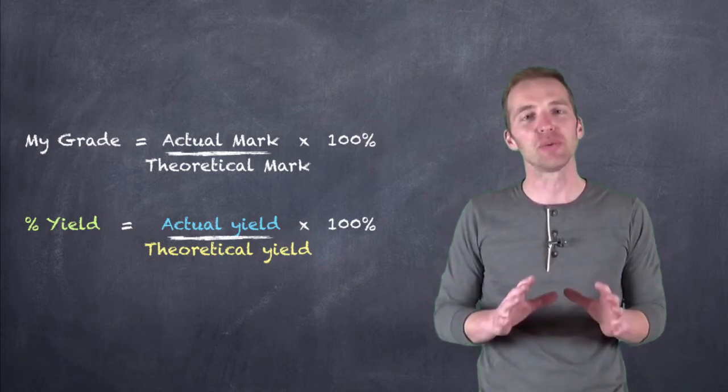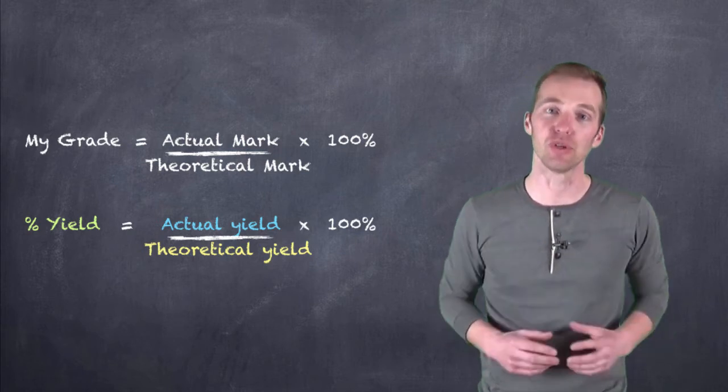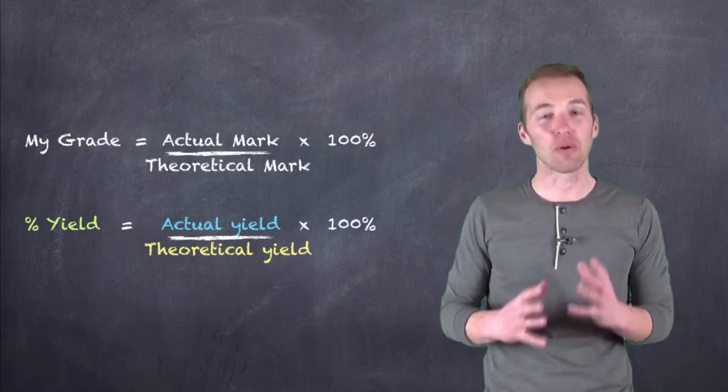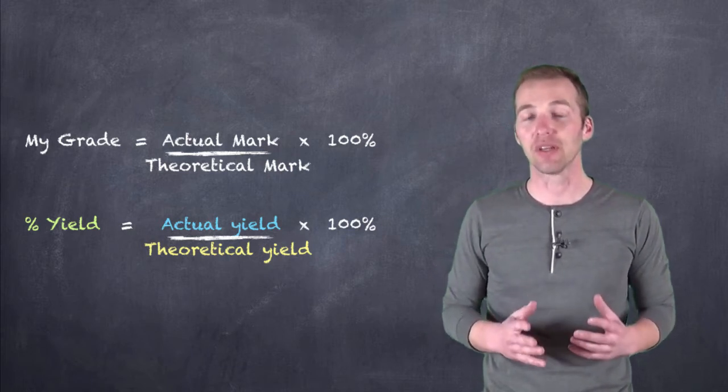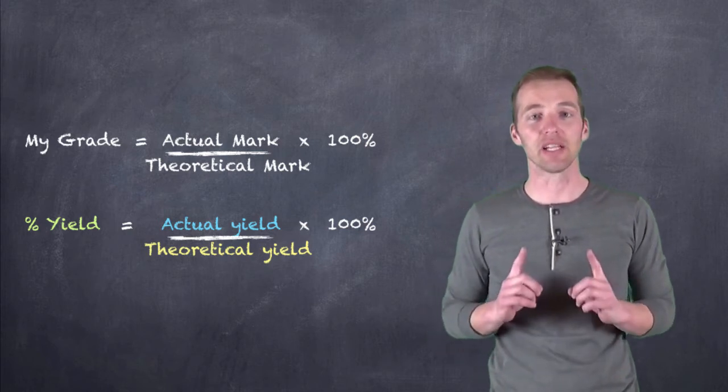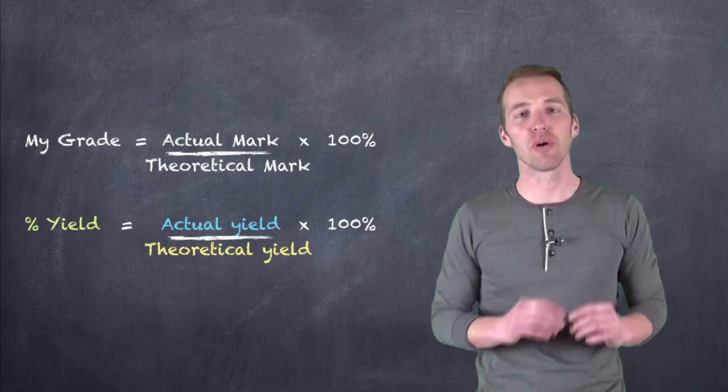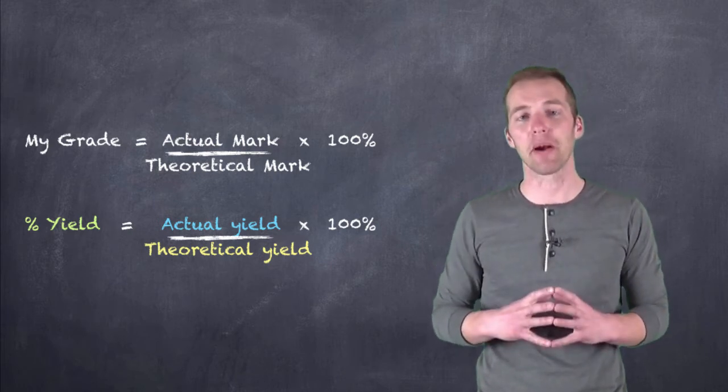So in trying to establish how successful a chemist you were or a chemistry student you were, at least in terms of how close you were to the accepted value of your particular reaction, you compare your actual yield to your theoretical yield in order to calculate your percent yield. And the closer you are to 100, the better you are in terms of your experiment.